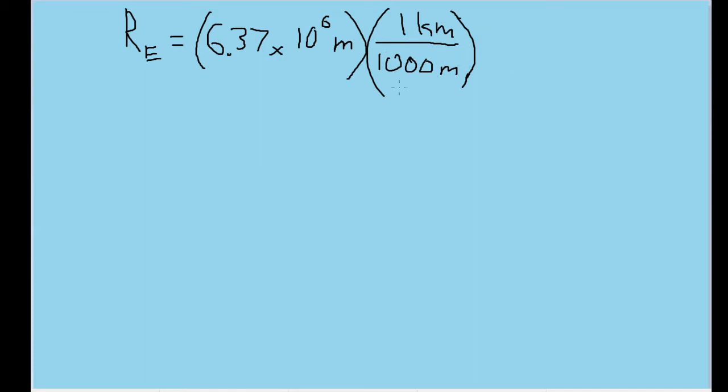So to make the conversion, I have set up a chainlink conversion here where the conversion rate between meters to kilometers is 1000 meters for each kilometer. And I put the meters in the denominator so that the units cancel out and we end up with kilometers. And that's how a chainlink conversion works roughly. So now we'll want to calculate this. And our radius is now 6.37 times 10 to the third power kilometers.